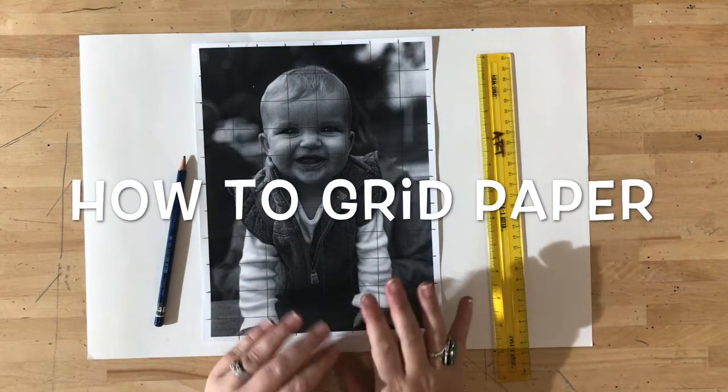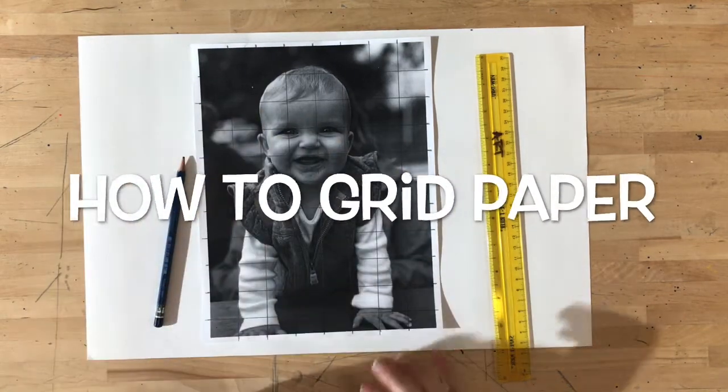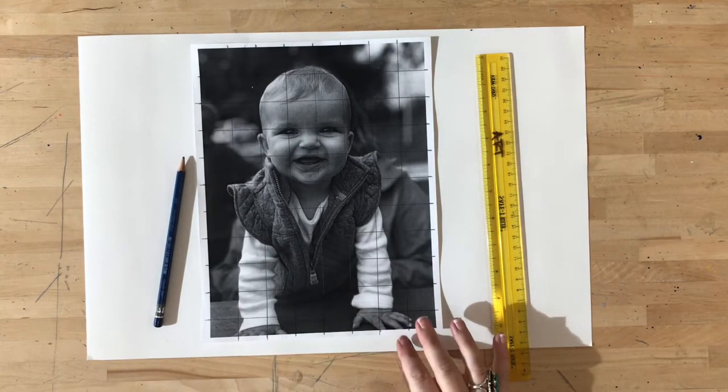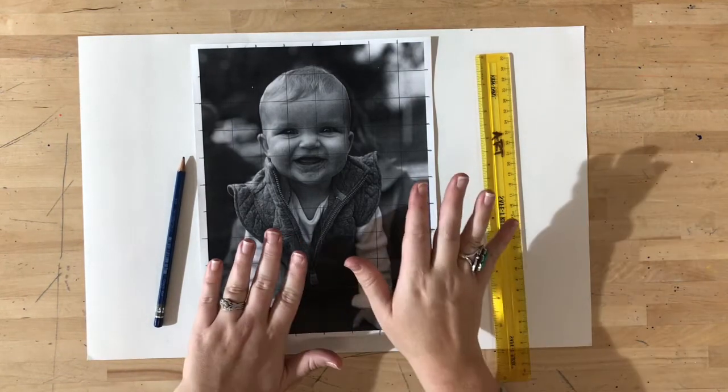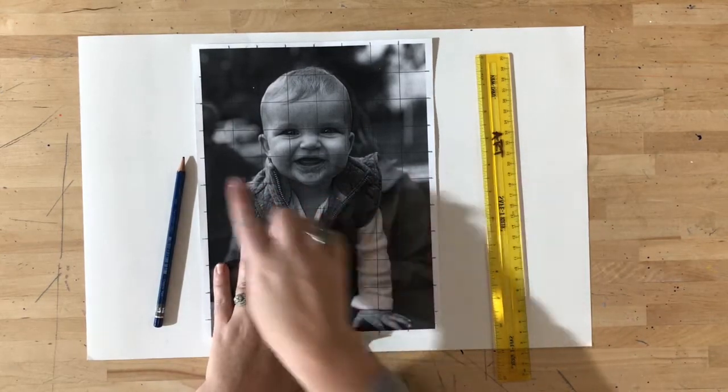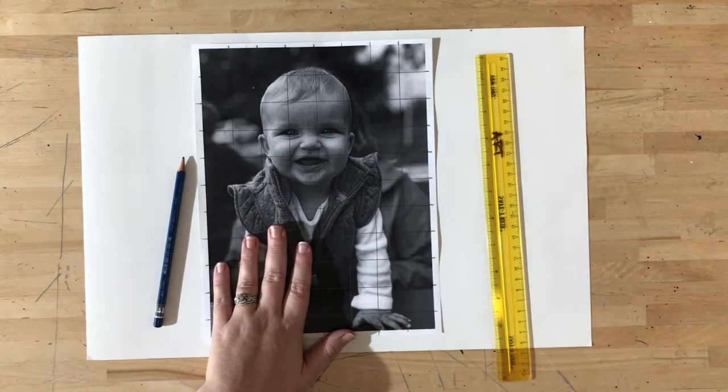In this video, you will learn how to place a grid over a blank piece of paper. Now if you're following along in my class, the first step to this process is finding a printed image, printing it, and placing a perfect grid over that image.